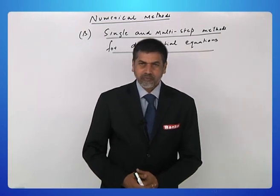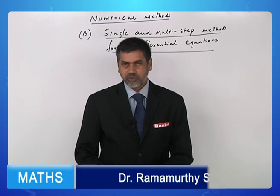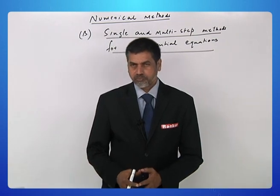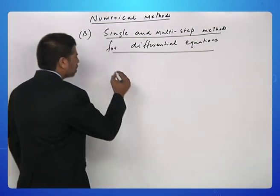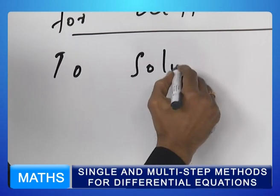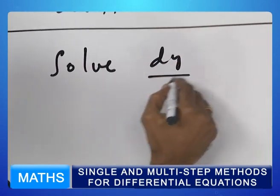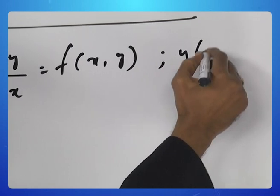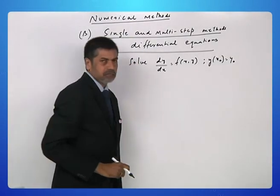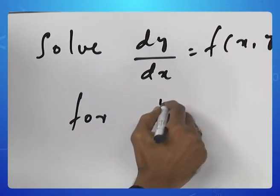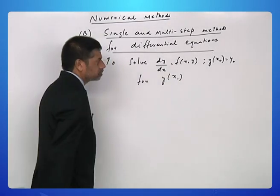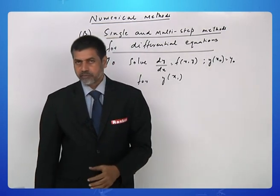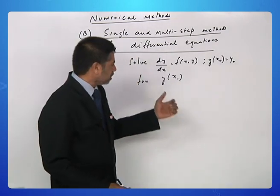The second part of numerical methods discusses single and multi-step methods for solving differential equations. Specifically, we discuss numerical techniques of solving ordinary differential equations. The basic problem is to solve dy by dx equals f of xy given the condition y of x naught equals y naught for y of x1. You are given the first order differential equation and then a condition, which we call an initial condition. The problem is to find y at x1.